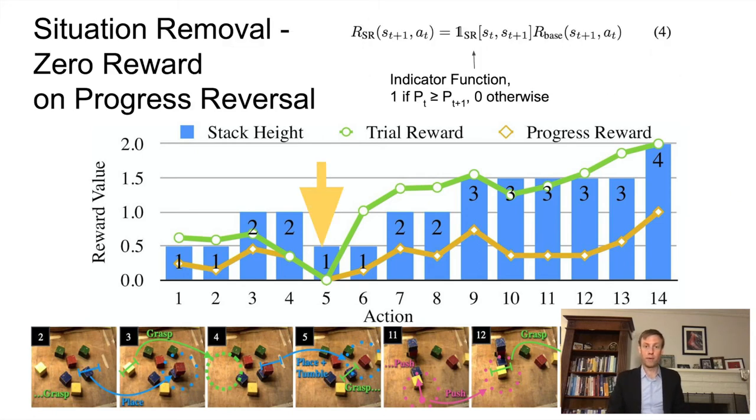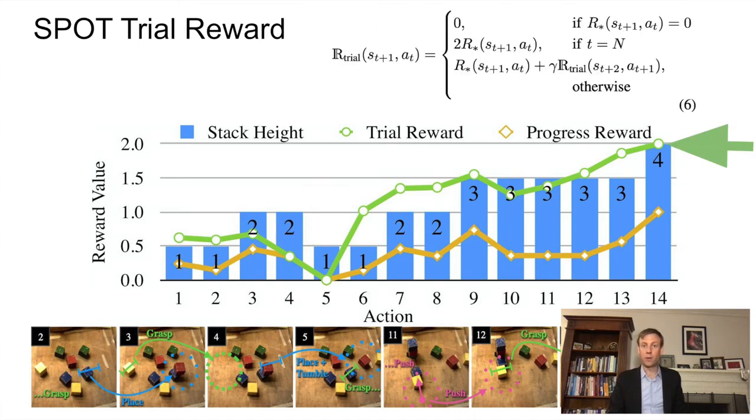Between steps four and five, you can see the robot knocks over the stack, so there is zero reward, since the situation removal indicator is set to zero. One key limitation of the rewards so far is that they are all instantaneous and cannot incorporate outcomes from far into the future. So for that, we have the SPOT trial reward, indicated by the green line, which aims to address that shortcoming. It is defined recursively from the last time step, so it can only be collected after a full trial is run. R star is whatever instant reward you might prefer, but in the case of this paper, it is RP, the progress reward. The trial reward at the final time step is double the instant reward, and every previous time step gets a portion of the reward from later time steps.